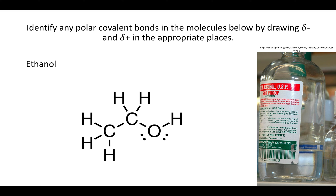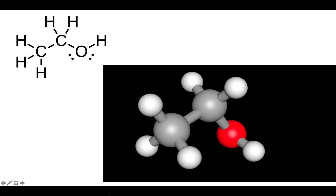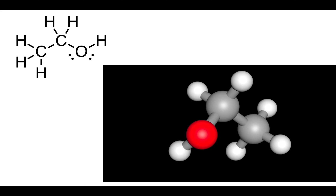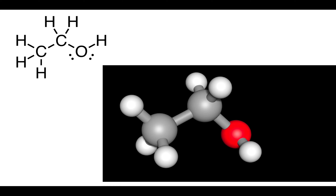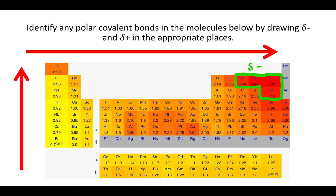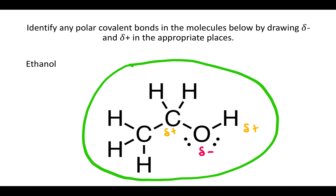Now let's do the same thing for ethanol — identify all the partial charges in ethanol, which is drinking alcohol. This is what drinking alcohol looks like three-dimensionally. We look at the molecule and ask: do we have a nitrogen, oxygen, fluorine, or chlorine? We do, so that atom is going to be slightly negative, and anything it's bound to is going to be slightly positive. Those are the partial charges on ethanol.